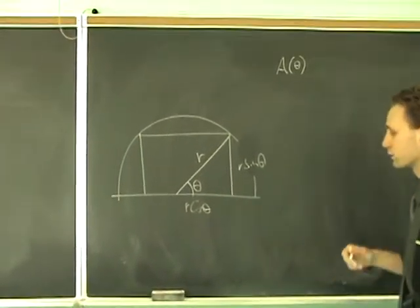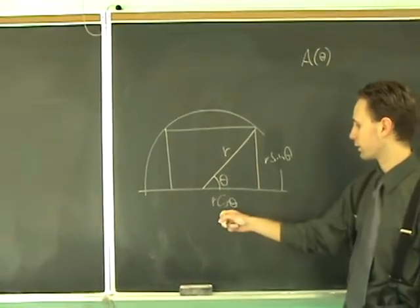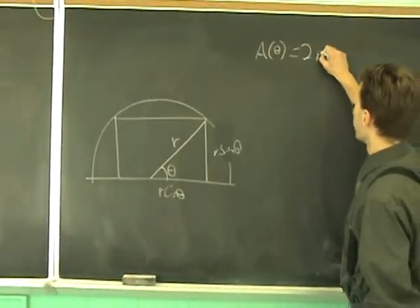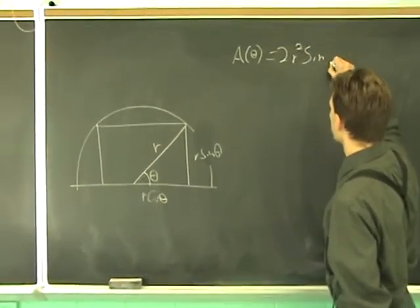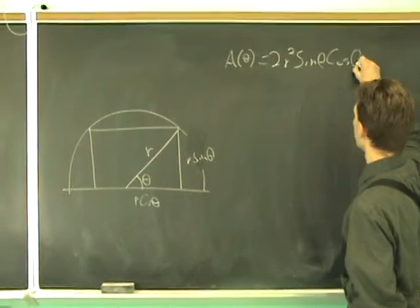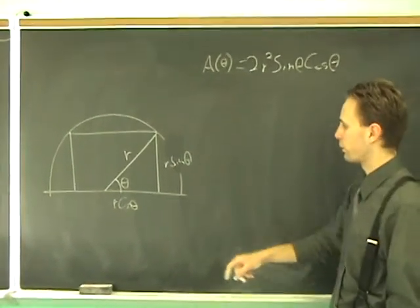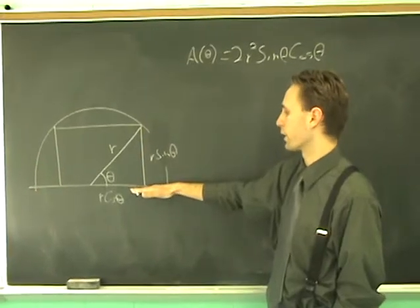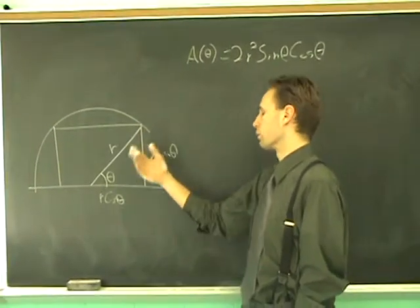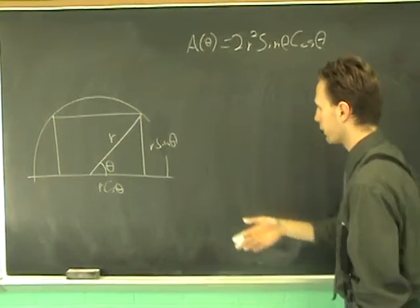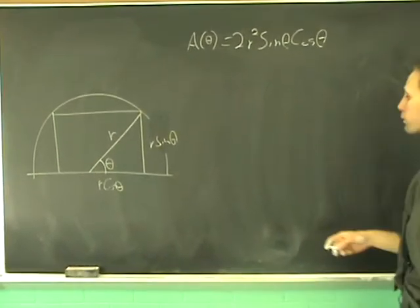So, the area as a function of theta is 2 times this, times this. Or, 2R squared, sine theta, cosine theta. And we want to maximize this function on the interval. Theta can be as small as 0, in which case there's going to be 0 area. Or it can be as large as pi over 2. Again, 0 area. So, we've got to look for critical numbers.